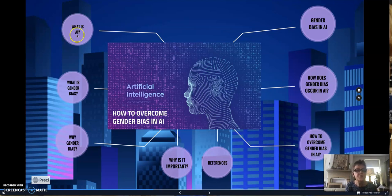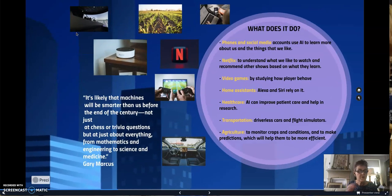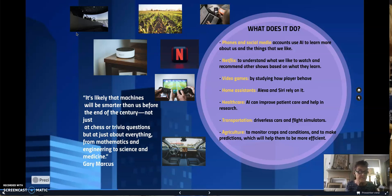Maybe to start, we can review some of the things that AI does. Personal electronic devices or accounts like our phone or social media use AI to learn more about us and the things that we like. Netflix, of course, uses AI to understand what we like to watch and recommend other shows. It can also make video games more challenging by studying our player behavior.